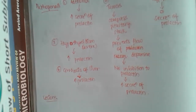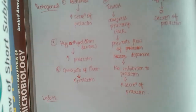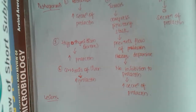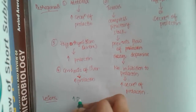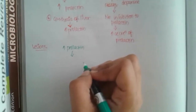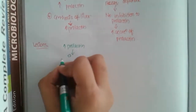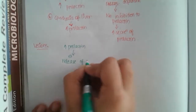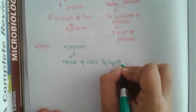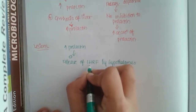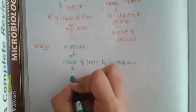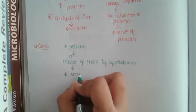Now let's look at the lesions and effects of increased prolactin. Increased prolactin inhibits the release of luteinizing hormone releasing factor, or LHRF, by the hypothalamus. This leads to decreased secretion of gonadotropins.